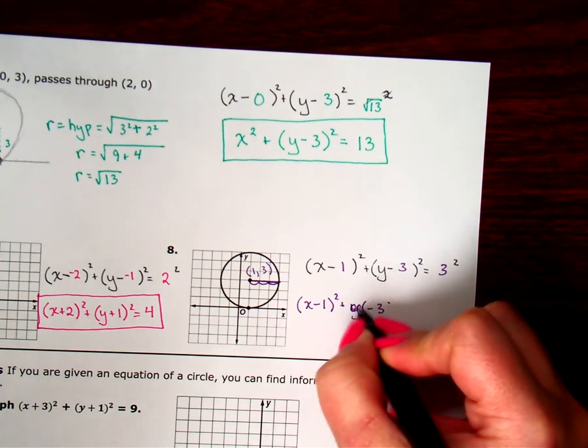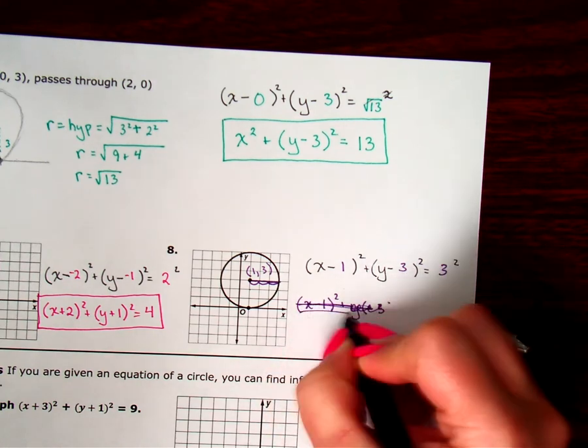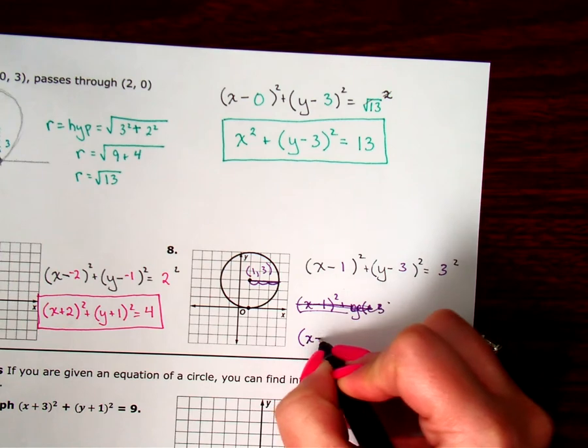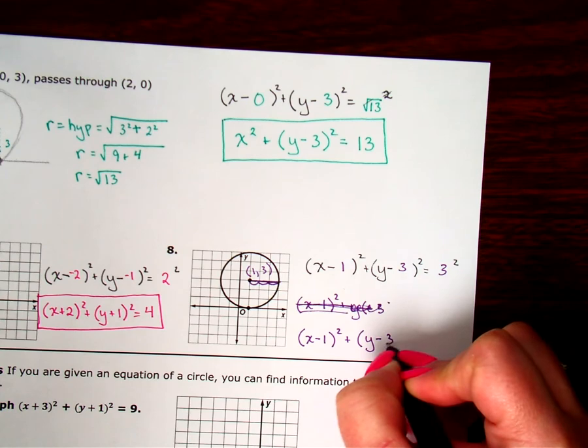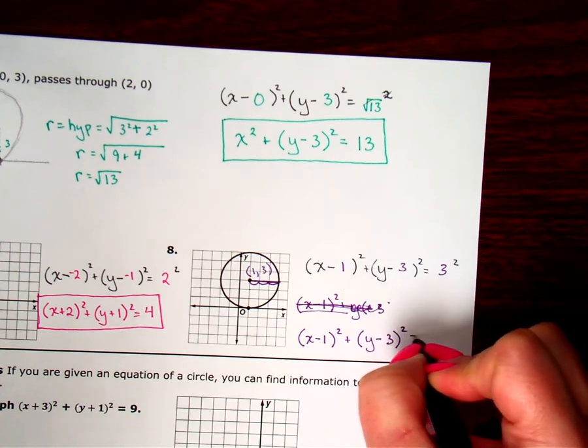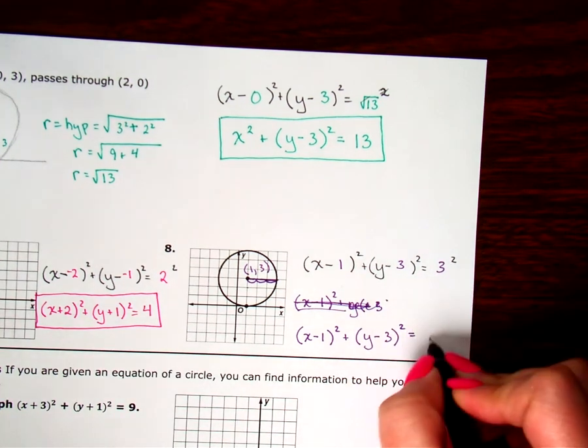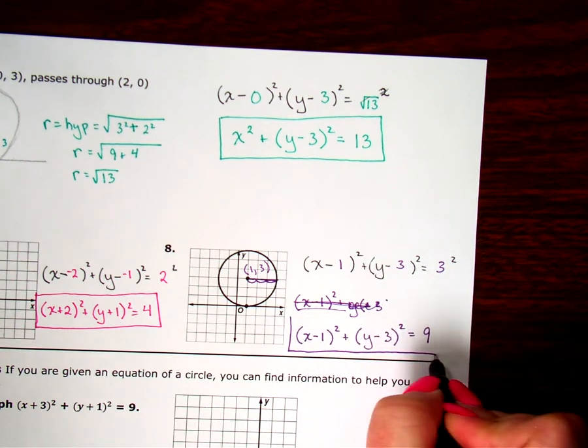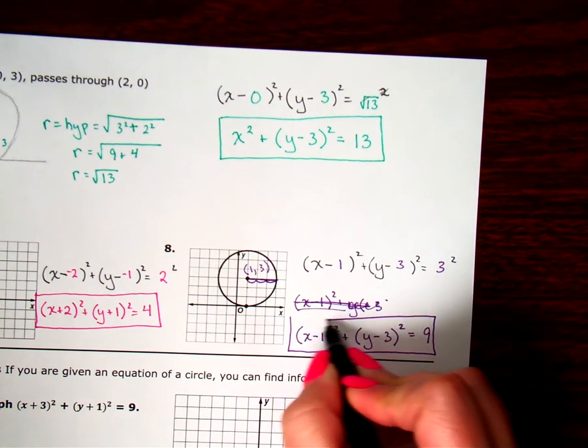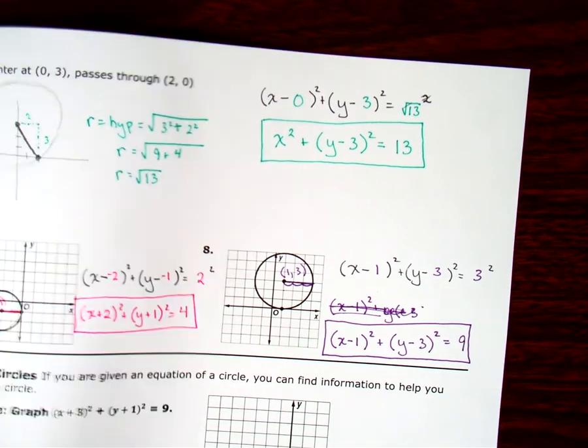Oops. I don't know what happened there. Let me redo this. X minus 1, close parenthesis squared, plus Y minus 3, close parenthesis squared, equals 3 squared. 3 times 3 is 9. There you go.